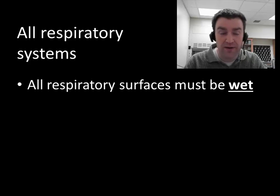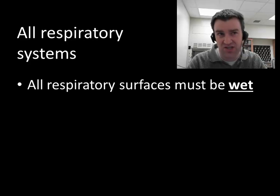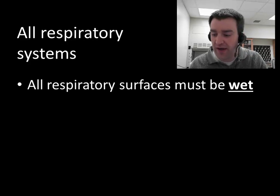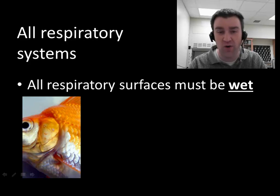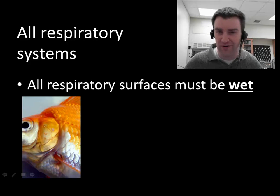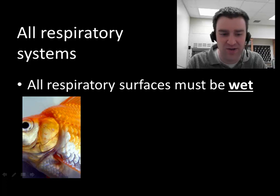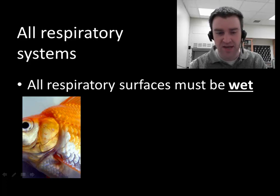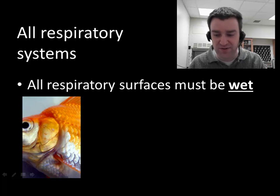For all organisms, in order to exchange gases, the exchange surface must be somewhat wet. That's going to be pretty easy for aquatic animals — they're going to have water all around anyway, so the gills of fish are very watery near the capillaries. For land animals that's going to be a bit more of a challenge, but different animals have different respiratory surfaces.